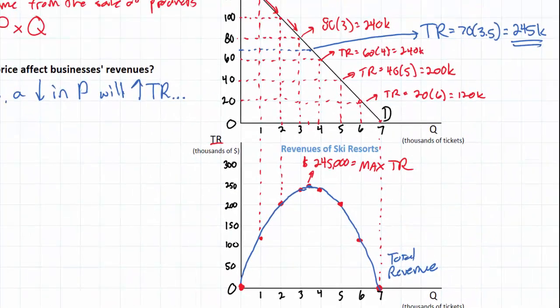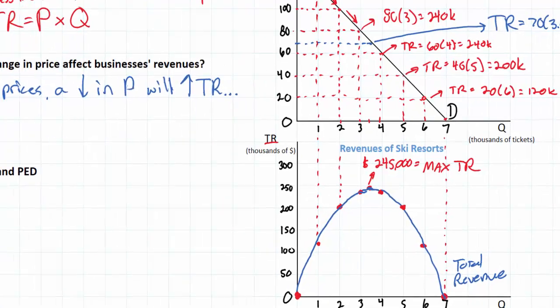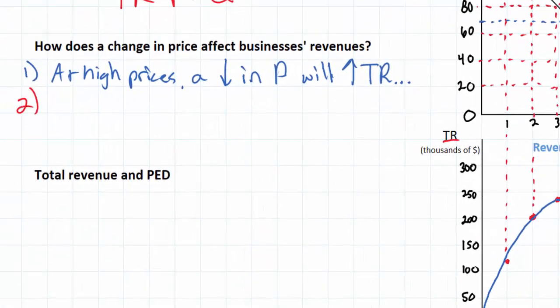Below a price of $70, however, the total revenues of ski resorts begin to fall. So let's put that over here on the left as well. So as price falls, total revenue is eventually maximized.